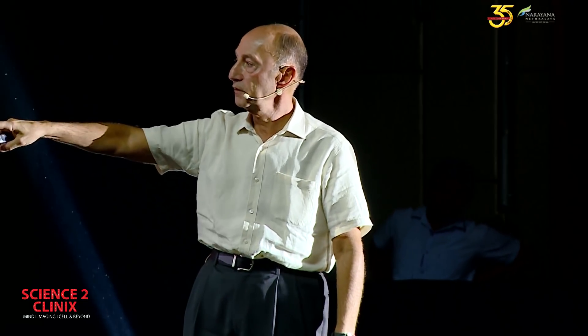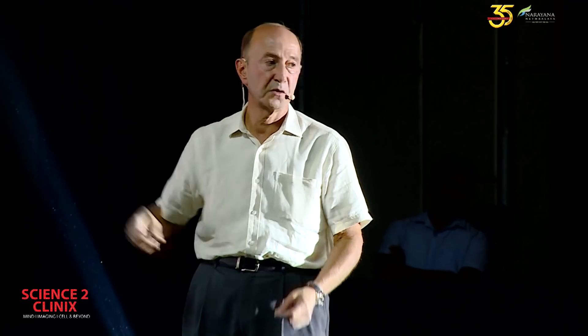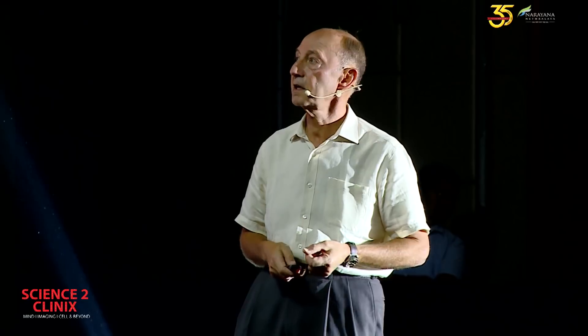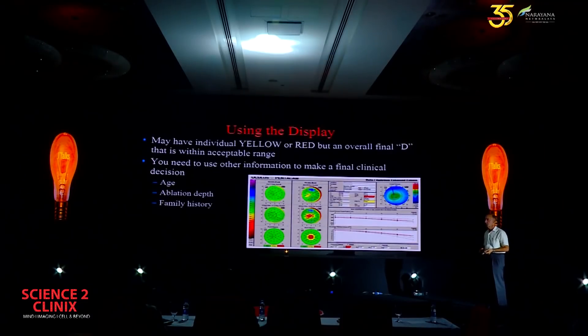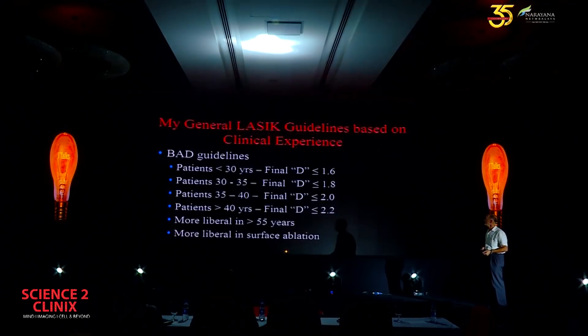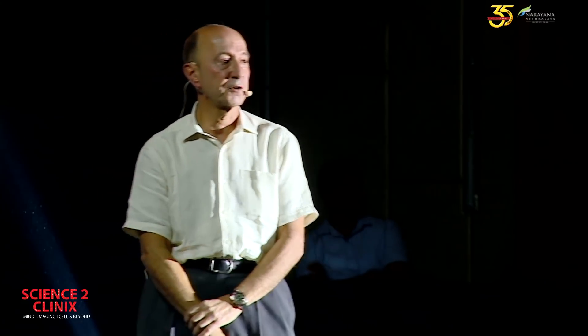The Final D is the statistically significant parameter. A patient with one elevated individual parameter but a normal Final D is like someone with an IOP of 22 but a cup-to-disk ratio of 0.1, no family history, normal nerve fiber layer, and normal visual field — they're normal. You have to use other information including age, ablation depth, family history, and stability. I use age as a prognostic indicator and am more cautious in younger patients.